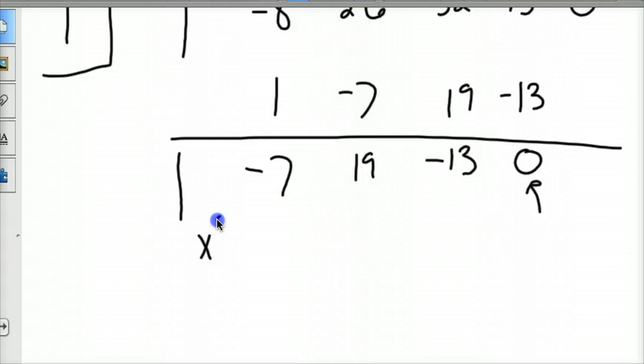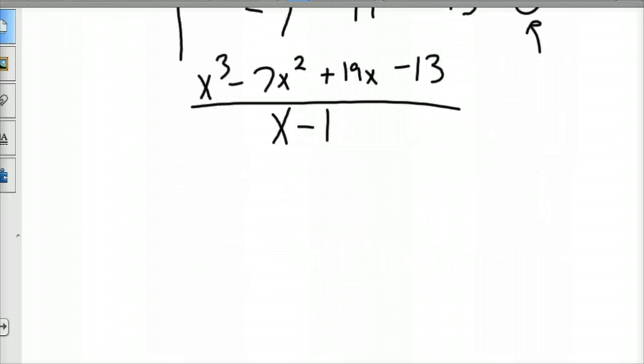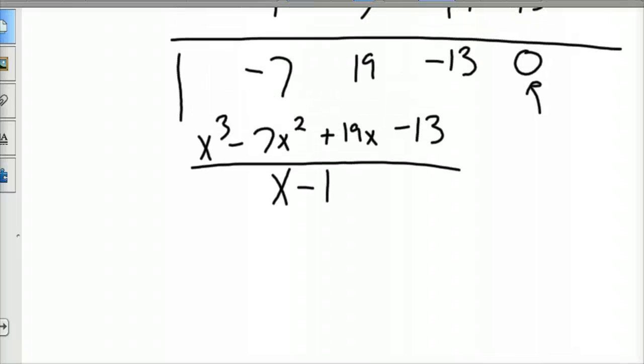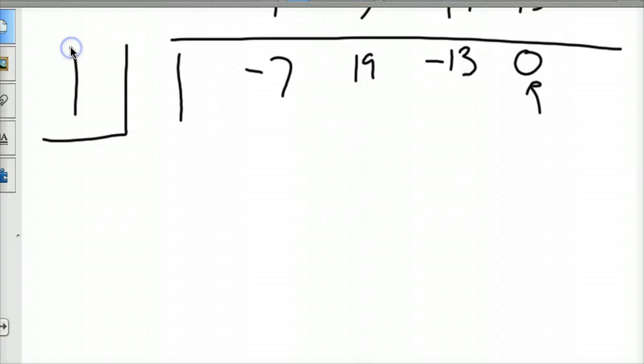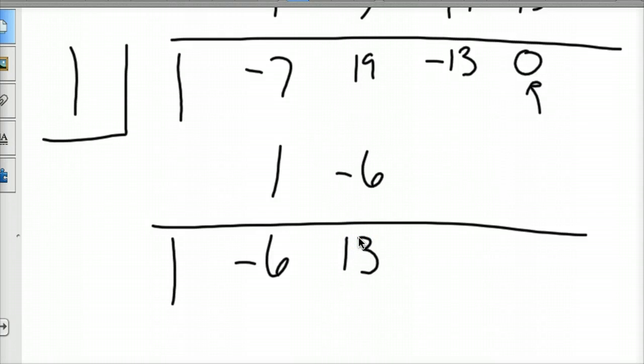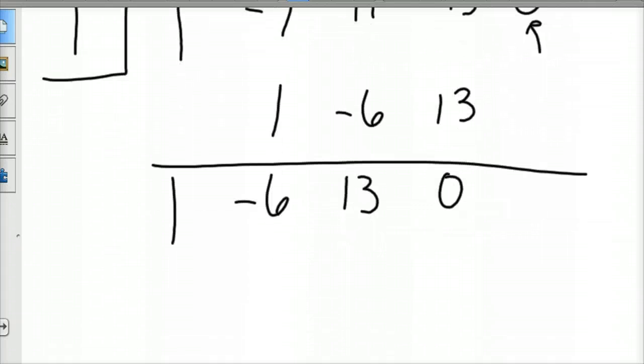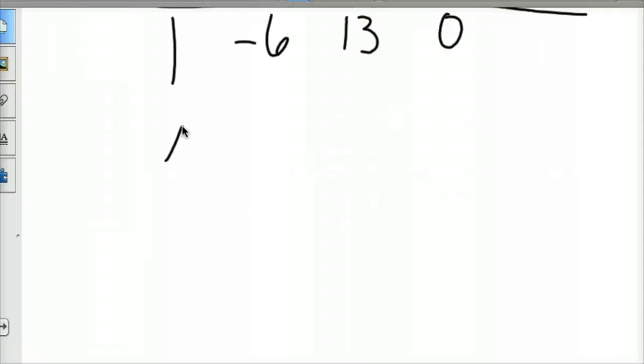And so then, now we're down to x cubed minus 7x squared plus 19x minus 13. And now we're going to divide that one last time by (x-1). It should get us down to a quadratic. So I'm going to divide now by one. Bring down your first term, which is one. Then you've got negative six. And then you've got negative six. And then you've got 13. And then 13 gives you another remainder of zero. So, again, we did it right. That's a good thing. So, we're down to, we've divided it three times by (x-1), and we're down to the polynomial x squared minus 6x plus 13.